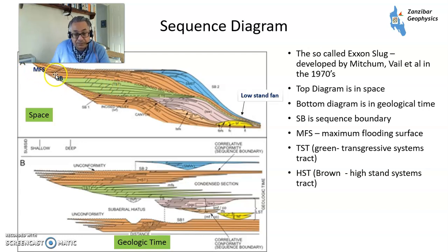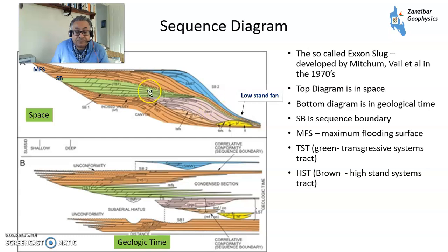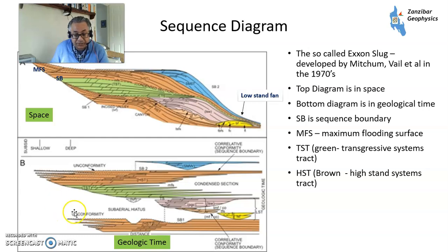Eventually you get the maximum flooding surface, where sea level covers the most area. Then sediment keeps piling over — you've got something called a high stand systems track where sea levels are relatively high and sediment is moving onwards into the deep sea. Then you've got another sequence boundary coming right over the top. That's what it looks like in space. And this is what it looks like in geological time — this is a chronostratigraphy diagram or a Wheeler diagram, developed by a man called Wheeler. This is time, and this is space.